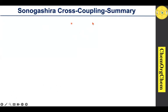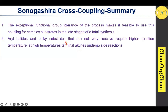In summary, the Sonogashira reaction is a powerful tool in organic synthesis to create a wide range of molecules including pharmaceuticals, natural products, and materials. This reaction shows exceptional functional group tolerance, making it feasible for use in late-stage total synthesis.